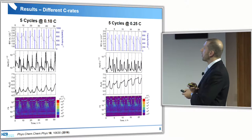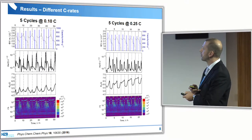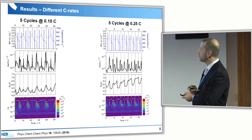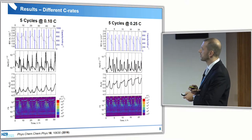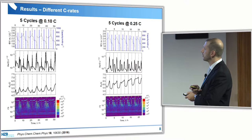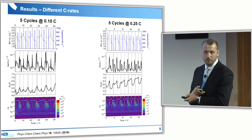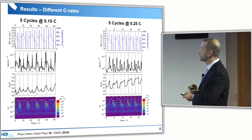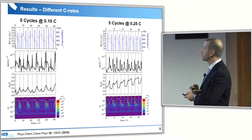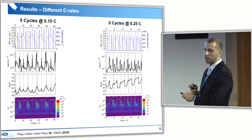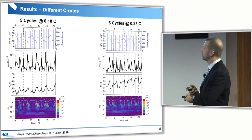When you combine this with the EIS results and the distribution of relaxation times, you see very nicely at 0.1C that there are two different relaxation processes. Every time sulfur precipitation occurs, you see a quite narrow charge transfer process — in full agreement with Céline's findings that precipitation occurs in a quite small area. But the precipitation of Li2S is much broader over the discharge and charge.